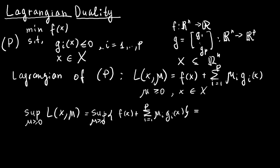If x is a feasible point then all g_i(x) ≤ 0. Trying to maximize over μ_i ≥ 0, having positive μ_i's will only decrease the value, so the supremum is achieved when all μ_i = 0, giving f(x). On the other hand, if at least one g_i(x) is positive, by assigning that μ_i a high positive value we can increase the expression to an arbitrarily large quantity, so the supremum equals +∞.